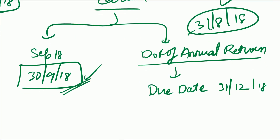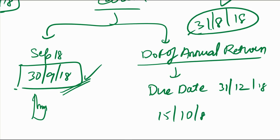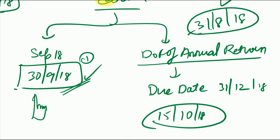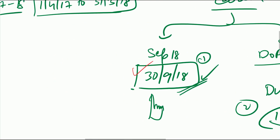If you are not filing the annual return before 30th September 2018 — suppose you are filing the annual return in October, like 15th October 2018 — then the earlier of these two dates would be 30th September 2018. So the maximum time allowed to you for issuance of the credit note is 30th September 2018.